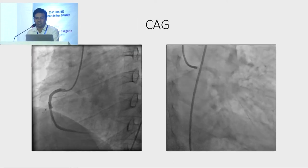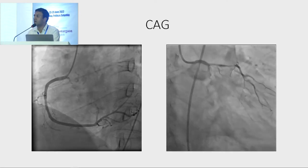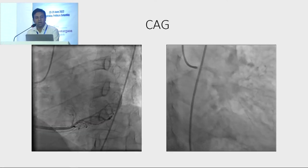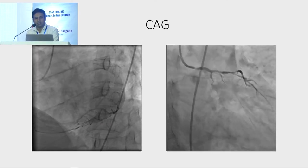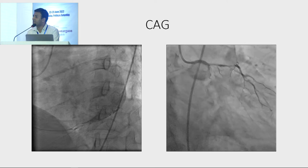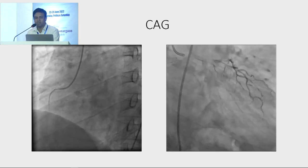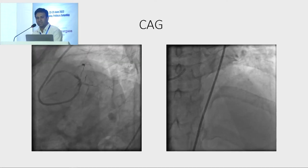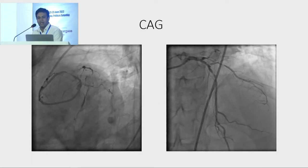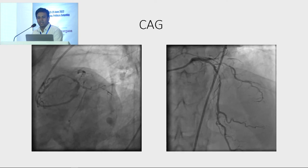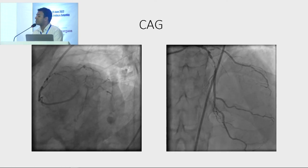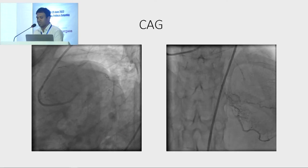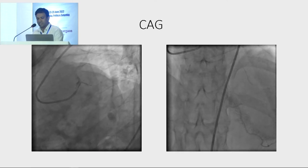This is his left system. We can see his circumflex is rudimentary and the right coronary is dominant. You can see his LAD is diffusely diseased from proximal to mid-LAD, with maximal stenosis of around 90% at the mid-LAD.